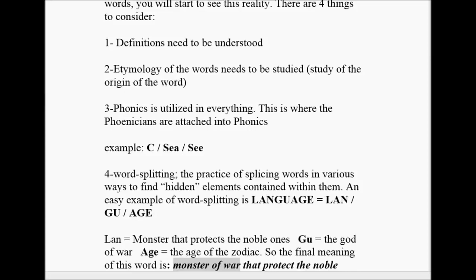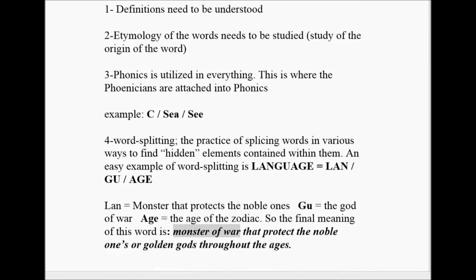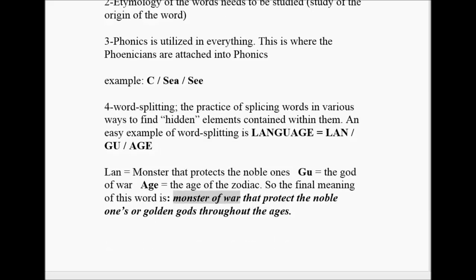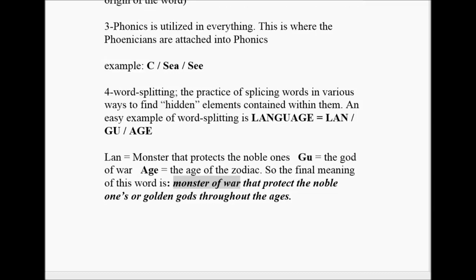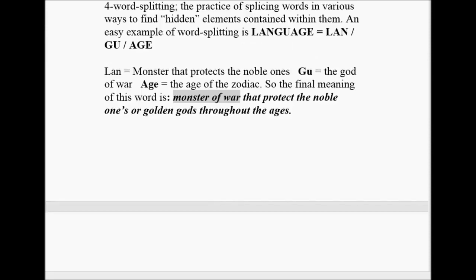1. Definitions need to be understood. 2. Etymology of words needs to be studied — it's the study of the origin of words. Phonics is utilized in everything. This is where the Phoenicians are attached to phonics. 3. Example: there are three definitions that mean completely different things — there's the letter C, there's the ocean, C, and then you can see with your eyes. 4. Word splitting — the practice of splicing words into various ways to find hidden elements contained within them. An example of word splitting is language: Lang, Goo, Age. 'Lang' means monster that protects the noble ones. 'Goo,' the god of war. And 'age,' the age of the zodiac. So the final meaning of the word language is a monster of war that protects the noble ones or golden gods throughout the ages.